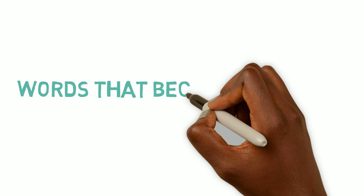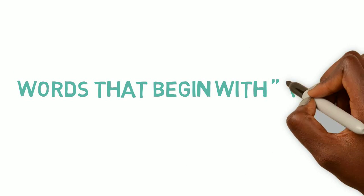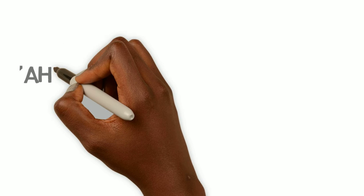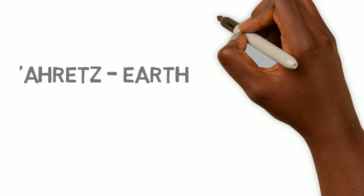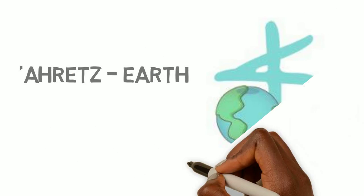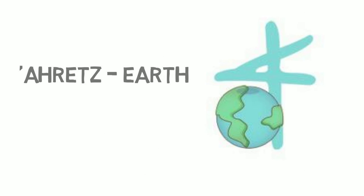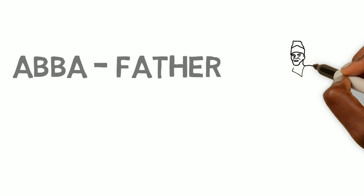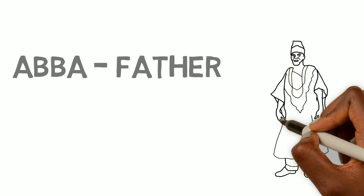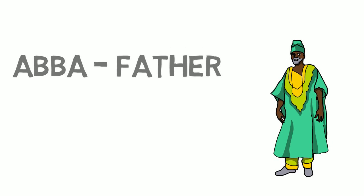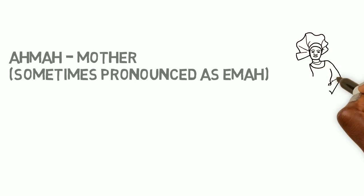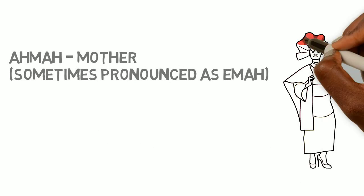Now we're going to look at some words that actually start with Aleph. We have Aretz, which is the earth. Abba, which is father. Amma, which is mother. Mother is also sometimes pronounced as Ima.